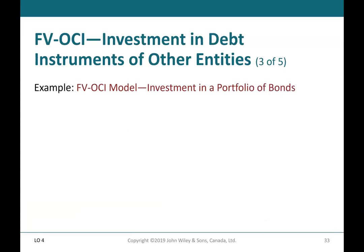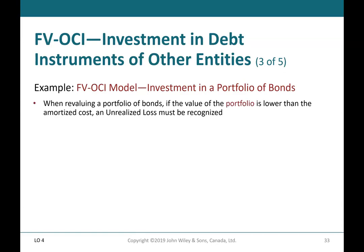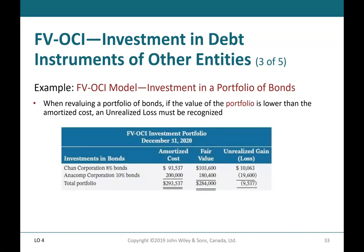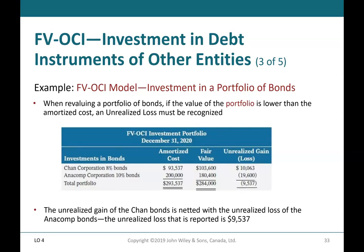FV-OCI — investment in debt instruments, Part 3 of 5. Fair value through OCI model — investment in a portfolio of bonds. When revaluing a portfolio of bonds, if the value of the portfolio is lower than the amortized cost, an unrealized loss must be recognized. A table shows amortized costs and fair values. Fair value is lower than amortized cost, so a loss of $9,537 must be recognized. The unrealized gain on the Chan bonds is netted with the unrealized losses on the Anacomp bonds, resulting in a net reported unrealized loss of $9,537.